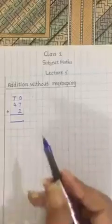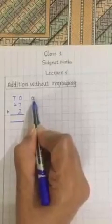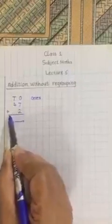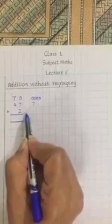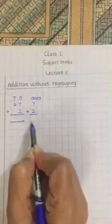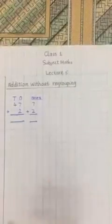I will write separate 1s. 7 plus 2. There are 4 tens and 7 ones.